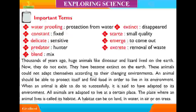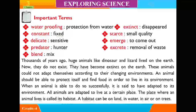Thousands of years ago, huge animals like dinosaurs and mammoths lived on the earth. Now they do not exist — they have become extinct. These animals could not adapt themselves according to their changing environments. An animal should be able to protect itself and find food in order to live in its environment. When an animal is able to do so successfully, it is said to have adapted to its environment.